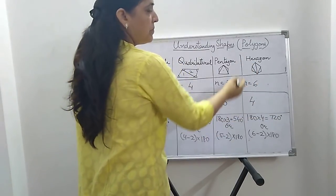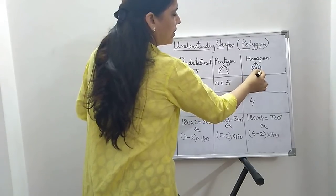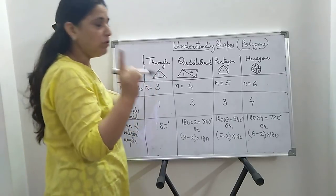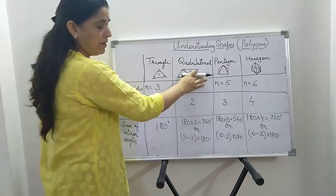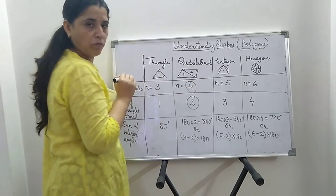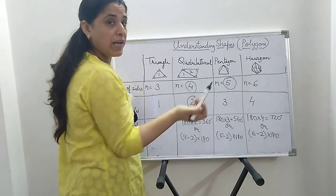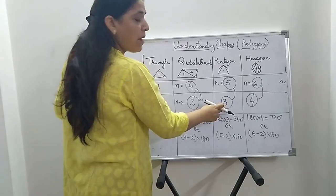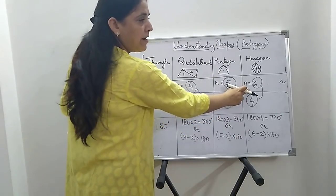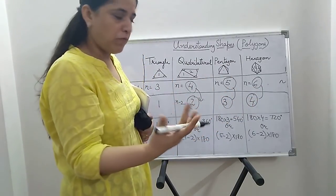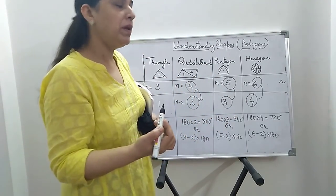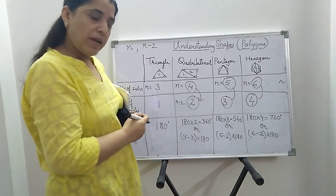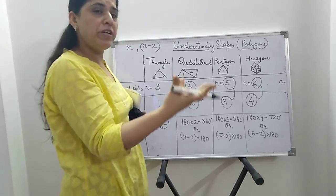If you see the pattern: a quadrilateral has four sides and two triangles are formed; five sides, three triangles are formed; six sides, four triangles are formed. So what is the relation? How many triangles are formed if the number of sides is given? It is always two less than n. You can see: 4 minus 2 is 2, 5 minus 2 is 3, 6 minus 2 is 4. So if there are n sides, n minus 2 triangles are formed.